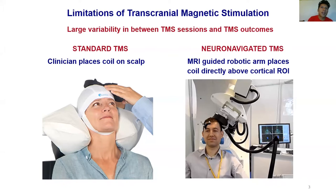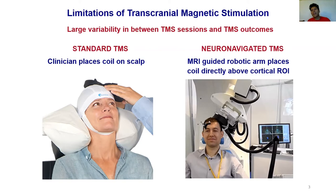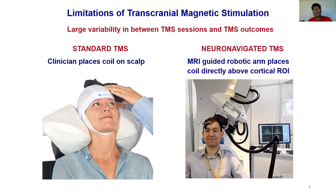More advanced neuro-navigated TMS systems use MRIs along with cameras to provide much more precise coil placement. Typically, the neuro-navigated approach prescribes placing the coil directly above the cortical center of mass. This is done because the E-field in a spherical head model is highest directly under the coil, and experimentally placing the coil above the targeted cortical site results in a lower stimulation threshold. The coil is also oriented to induce an electric field normal to the so-called walls, as this is known to result in a lowered stimulation threshold.